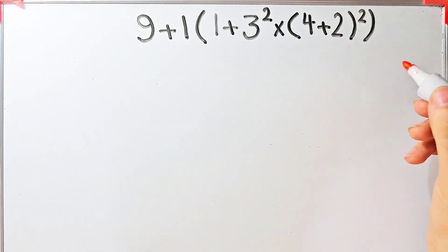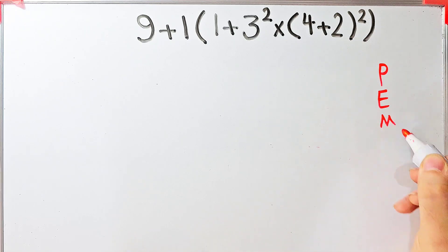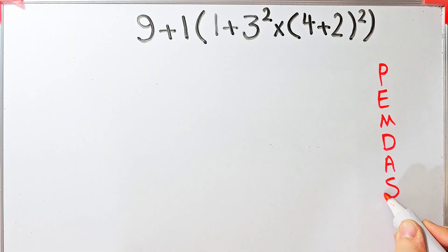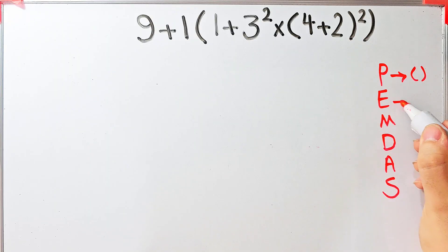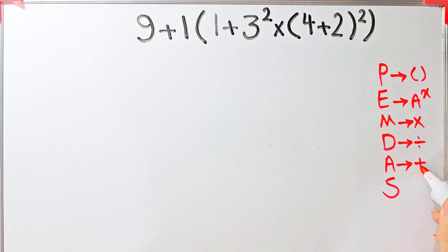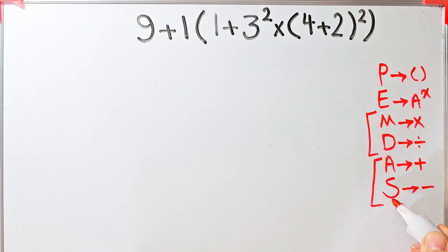To solve this question, we need to follow the order of operations, which is PEMDAS. PEMDAS shows the priority of mathematical operations, and if you don't pay attention to this rule you get the wrong answer. P stands for Parentheses, E stands for Exponent, M stands for Multiplication, D stands for Division, A stands for Addition, and S stands for Subtraction.